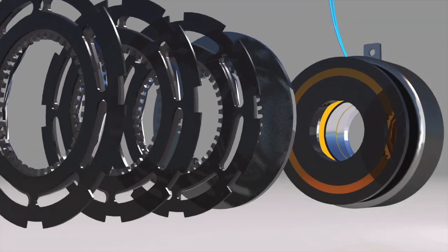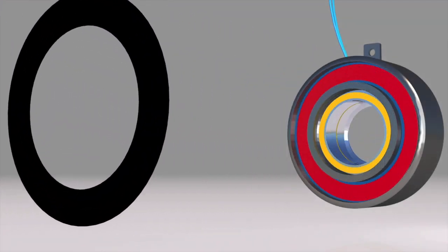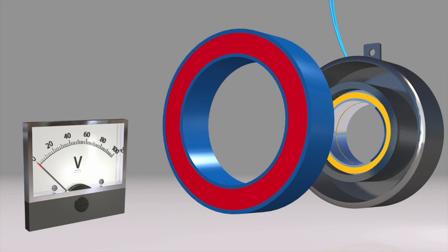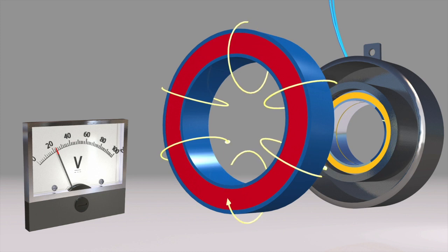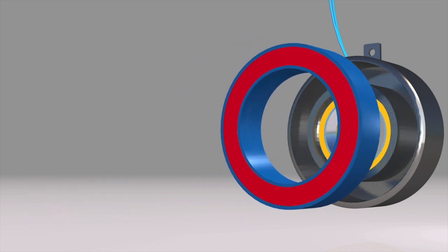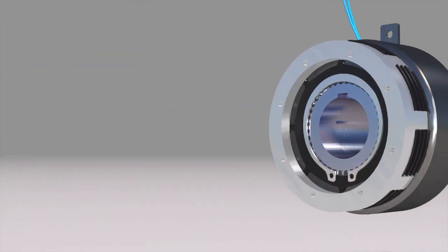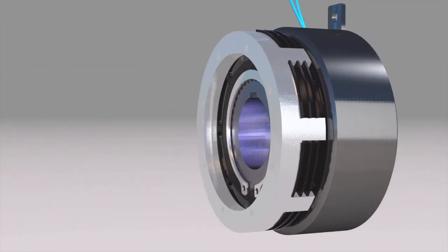Multiple disc clutches operate via electrical actuation but transmit torque mechanically. When voltage current is applied to the clutch coil, the coil becomes an electromagnet and produces lines of flux. Coil voltage is usually 24 or 90 DC, but other voltages are available.